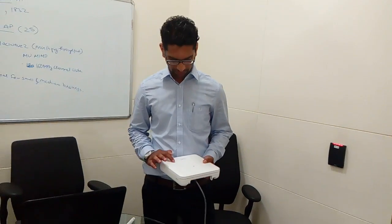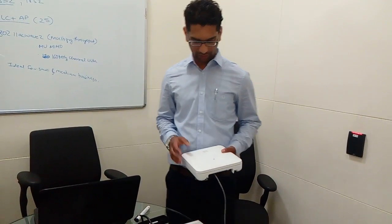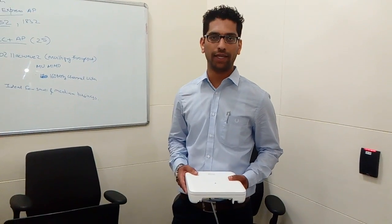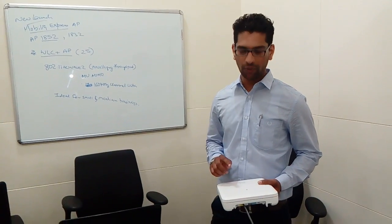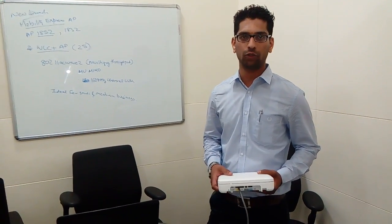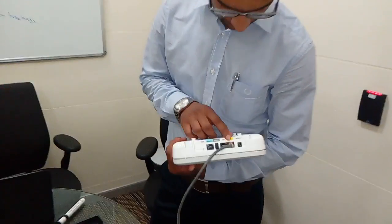This is new in the market from Cisco, which will support up to 25 access points. It acts as a WLC, meaning a controller. So you don't have to buy a separate controller when this access point is in your network. This is the 1852 series access point, newly introduced by Cisco.